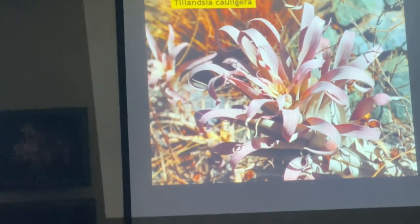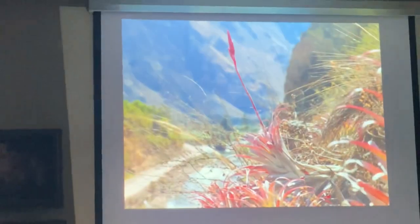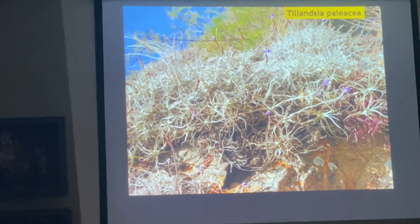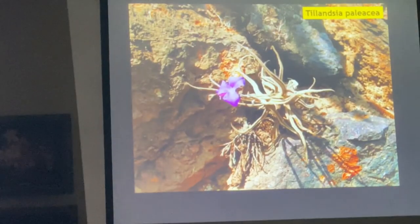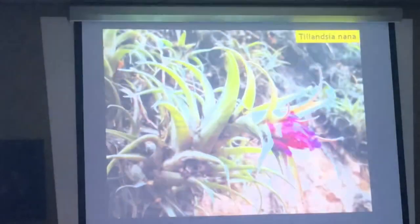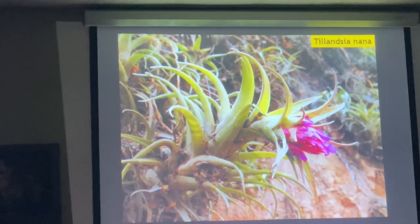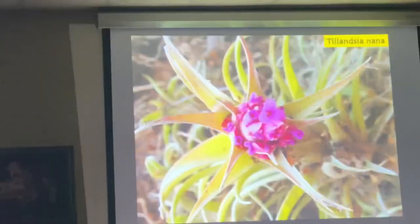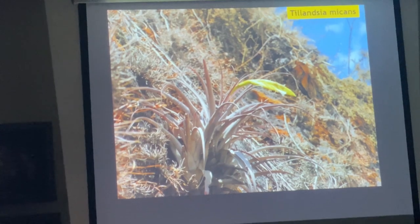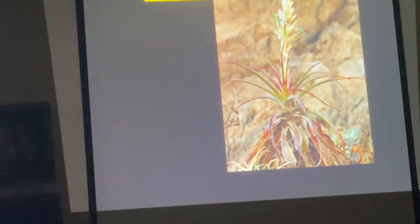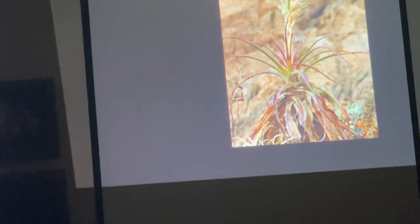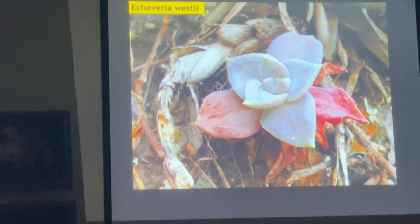Tillandsia calligera — very soft leaves. And Tillandsia palacea in flower growing next to the river. A little ladybug. Tillandsia nana, which is not very common. And Tillandsia mikans with yellow bracts and white flowers. Puya densiflora also grows next to the river. So you go for maybe a one-mile hike and get to see five or six different species.